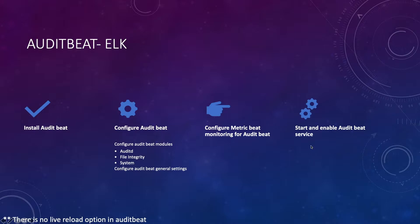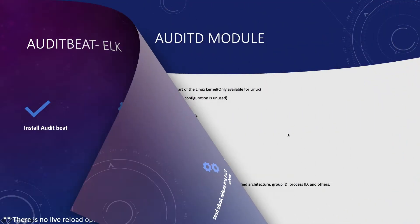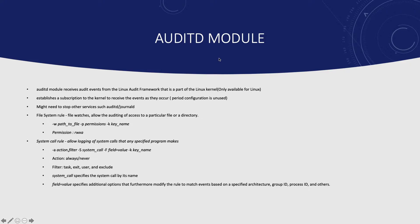Finally we'll start and enable auditbeat service. One thing to note is that there is no library load option in auditbeat. Before we move to the lab system, let's look at each of these modules individually. First, the auditd module — it receives audit events from the Linux audit framework which is part of the Linux kernel. It establishes a subscription to the kernel to receive audit events as they occur. You might need to stop other services such as auditd and journald for this module to work.